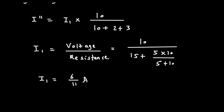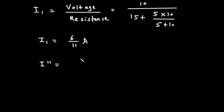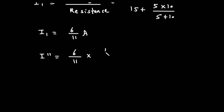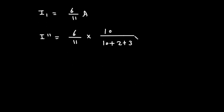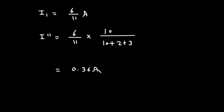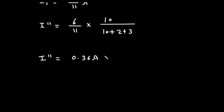Now substituting into the current division rule: I double prime equals I1 × (opposite branch resistance / total) = (6/11) × 10 / (10 + 2 + 3) = (6/11) × (10/15), which equals 0.36 ampere. The direction of I double prime is downward.